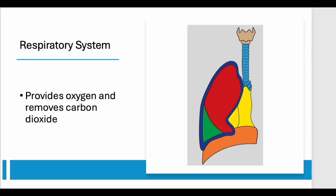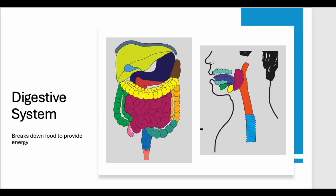And, where does our body get the energy and building blocks it needs? From the food we eat, thanks to the digestive system. From our mouth, to our stomach, to our intestines, this system breaks down food into smaller molecules that our body can absorb and use for energy, growth, and repair.